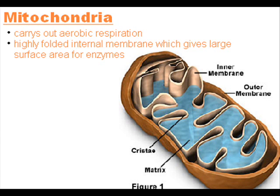Mitochondria are usually oval-shaped. They have a double membrane — the inner one is folded to form structures called cristae. Inside is the matrix, which contains enzymes involved in respiration. It's the site of aerobic respiration where ATP is produced. They're found in large numbers in cells that are very active and require a lot of energy.